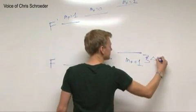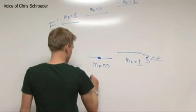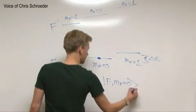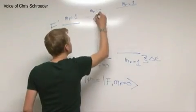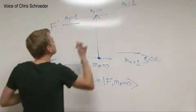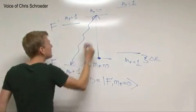We start in the MF equals zero ground state in the f manifold. By applying laser light, we can drive a transition to the MF equals zero state in the f prime manifold. After a characteristic decay time, the atom decays back to the ground state manifold and emits a photon.